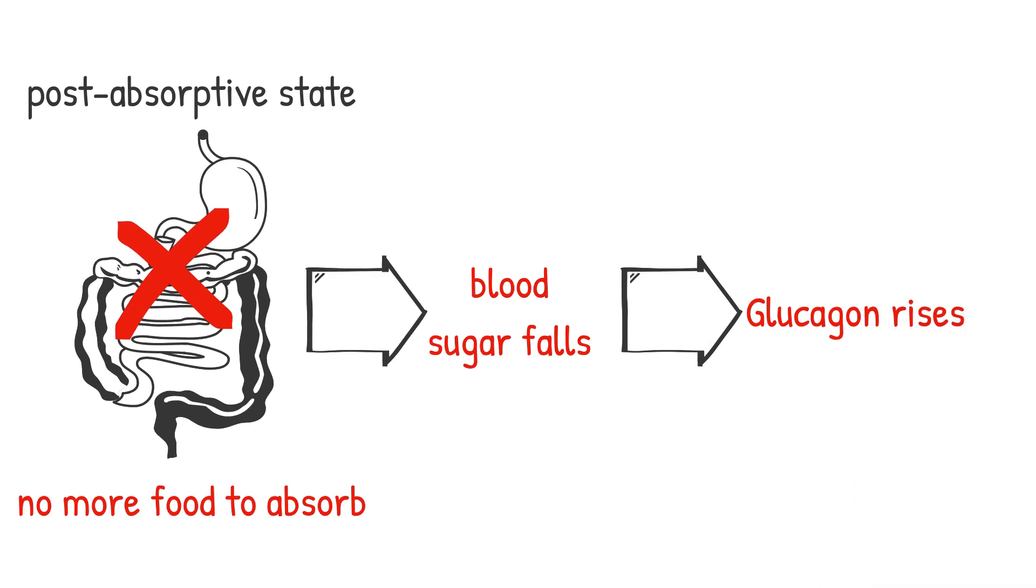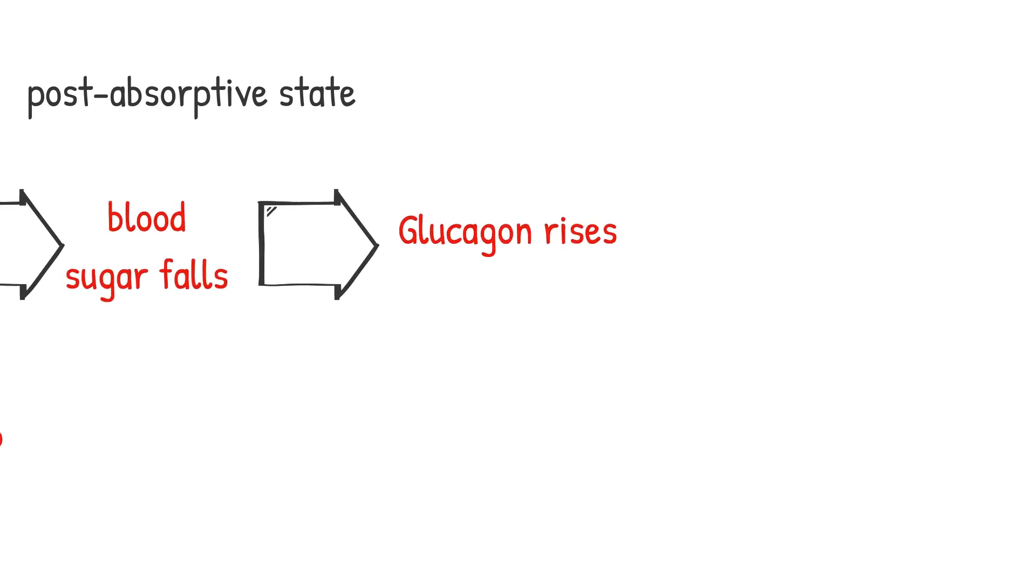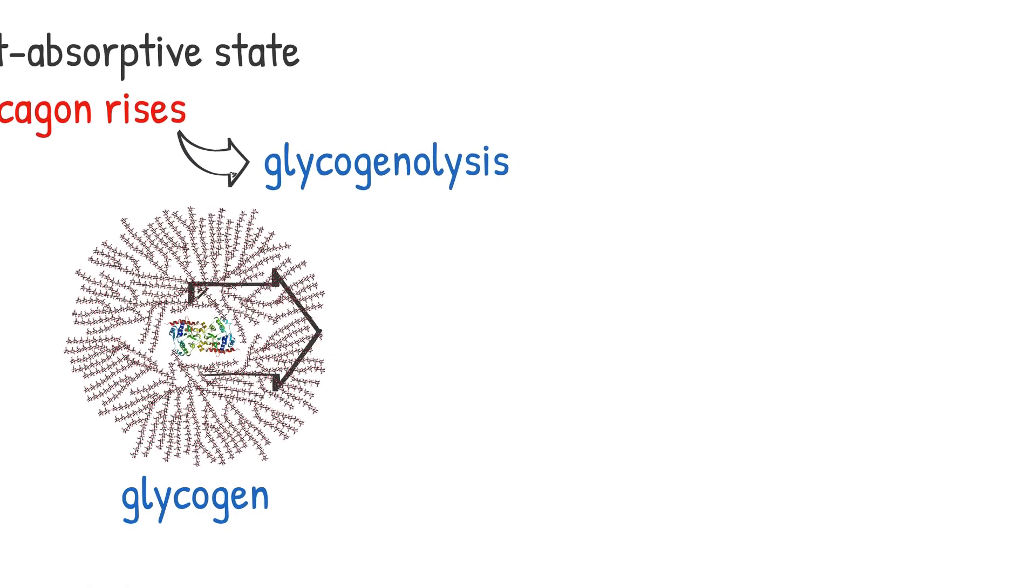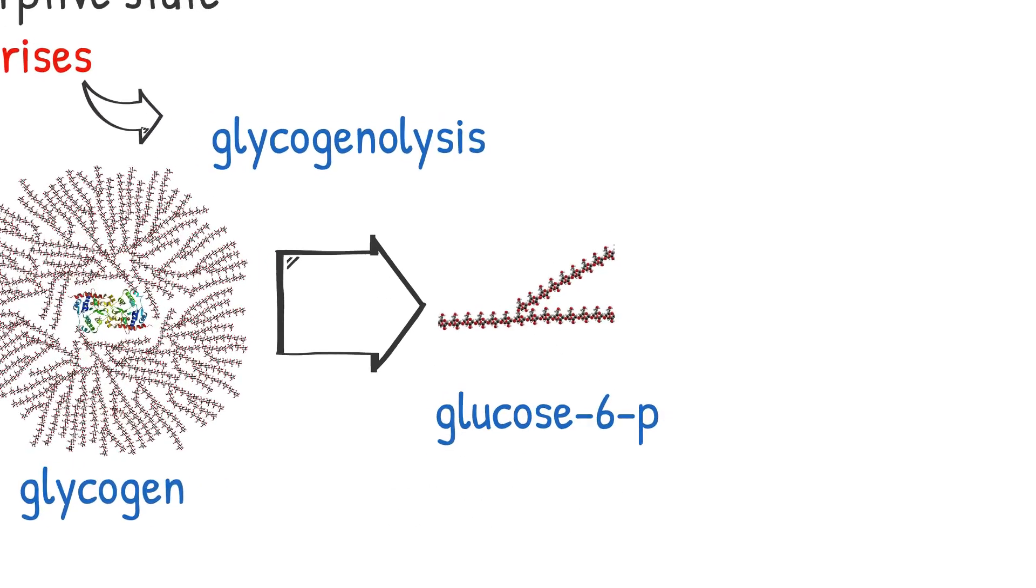Glucagon has an opposite effect to insulin. Increased glucagon induces the glycogenolysis, which means breaking down stored glycogen into glucose 6-phosphate.